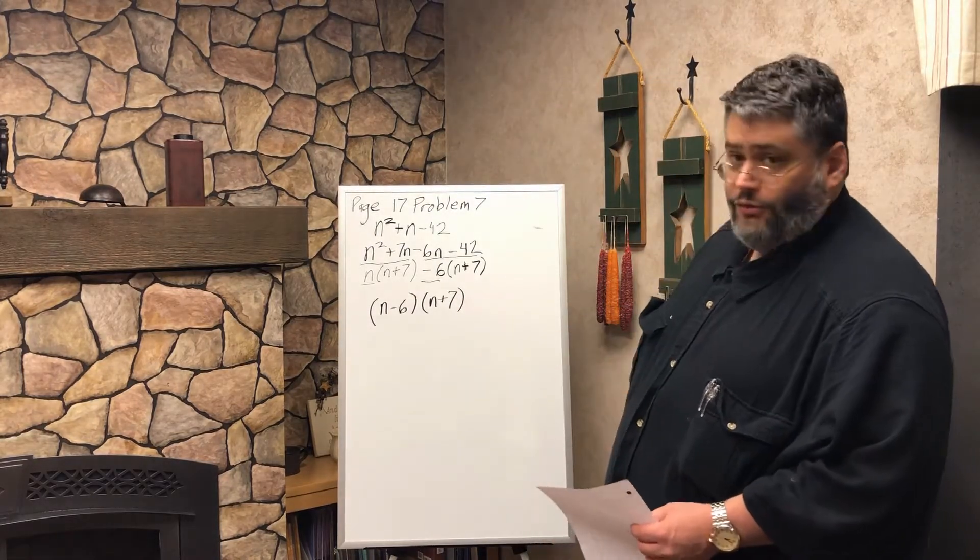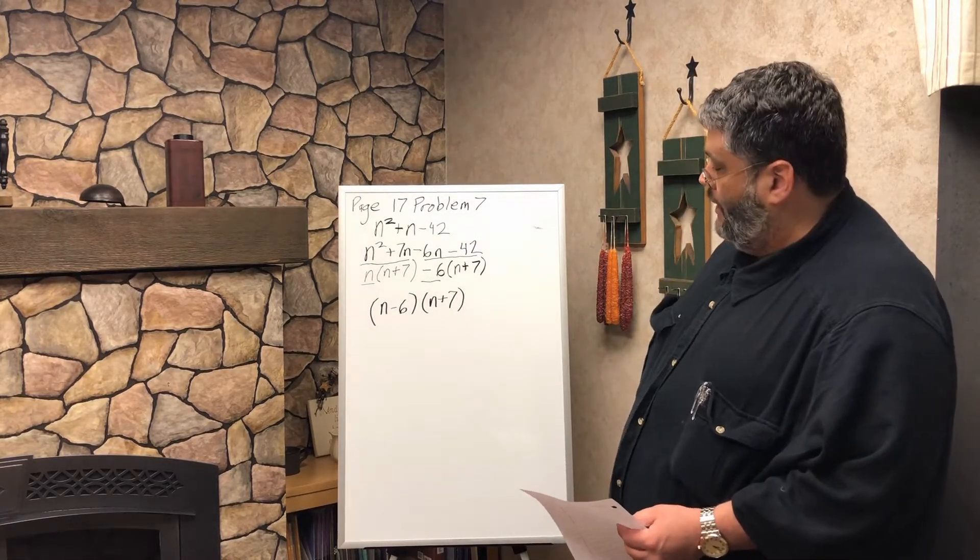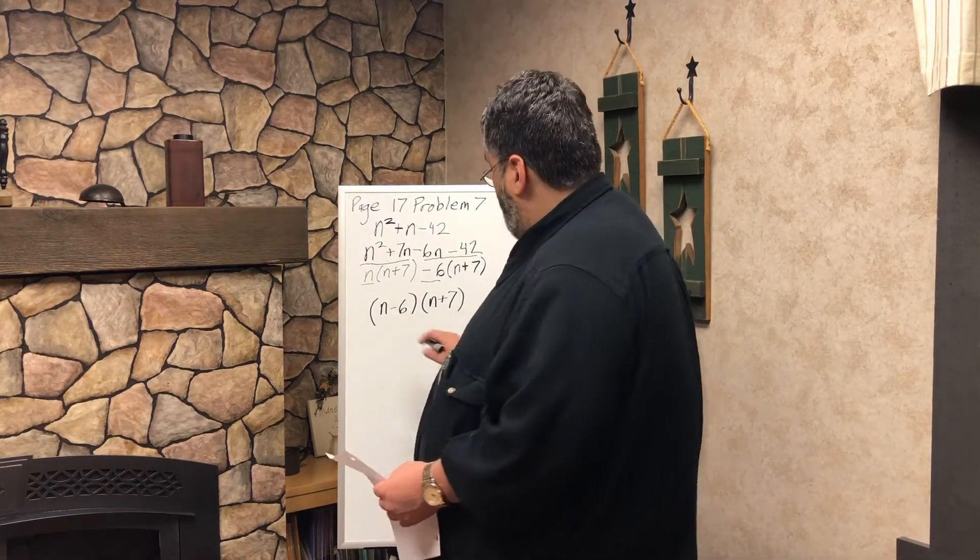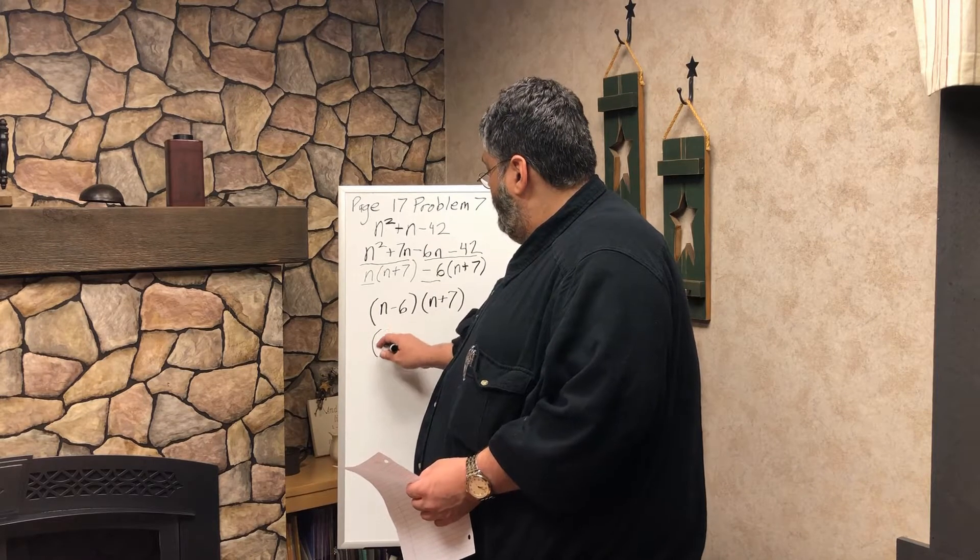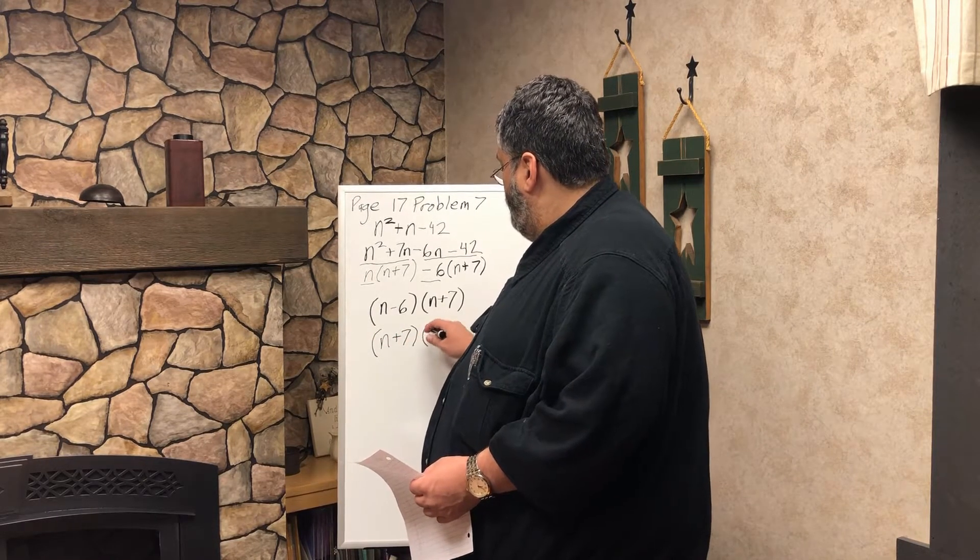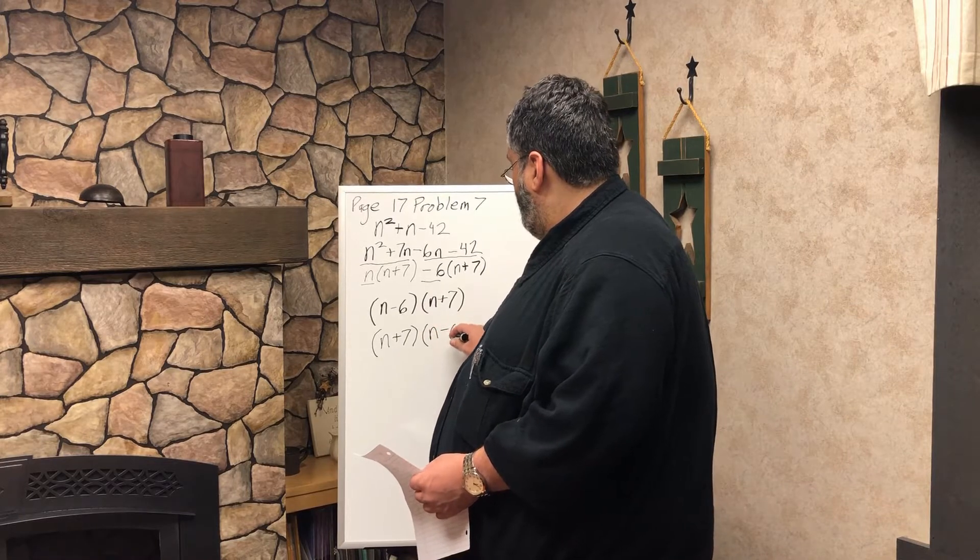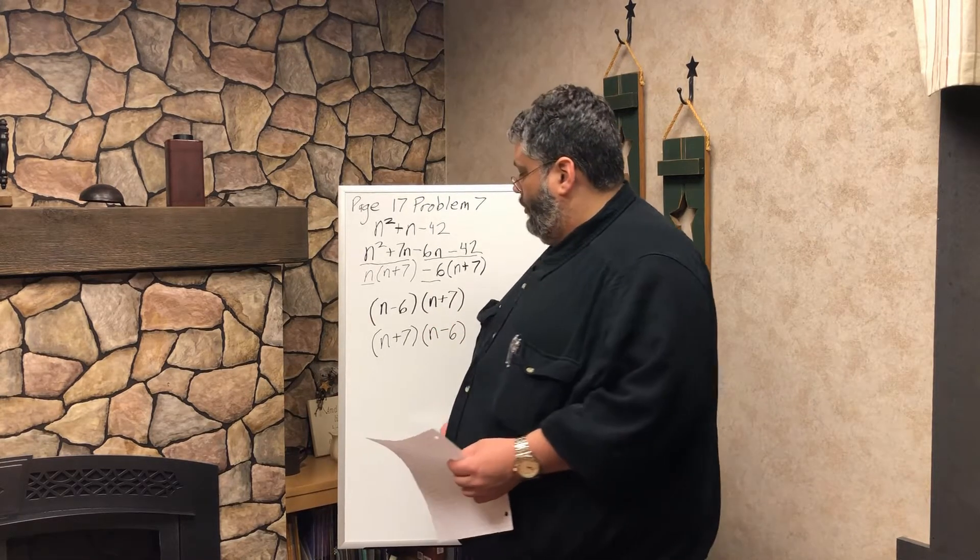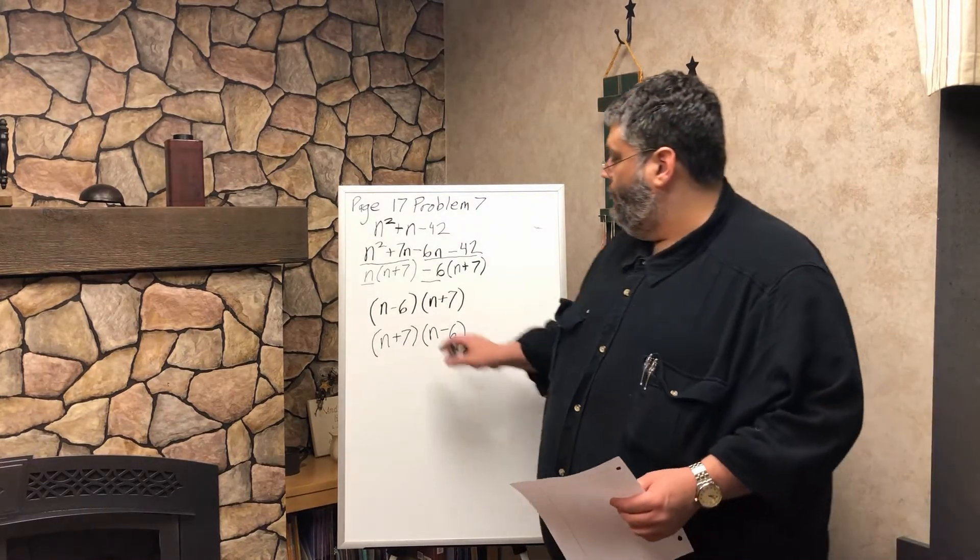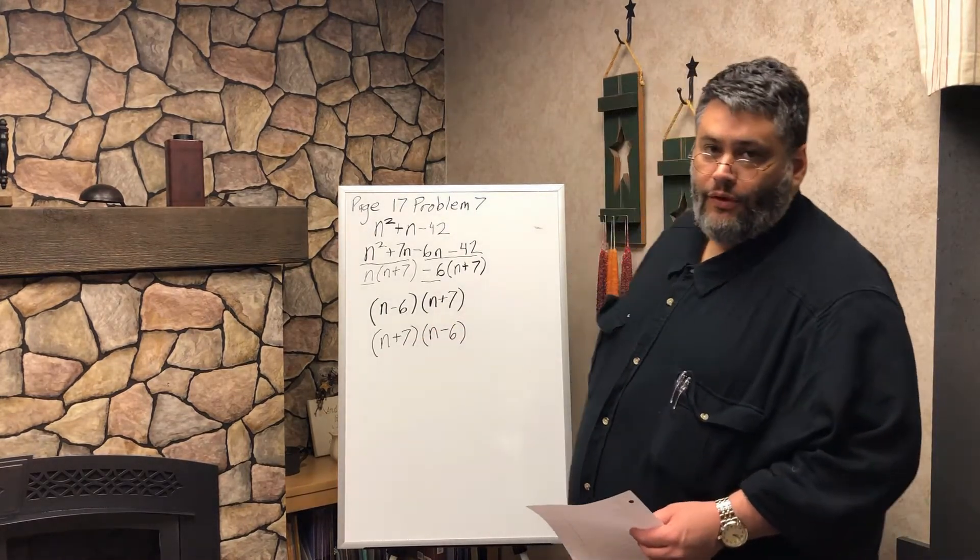So that what we have here is (n minus 6) times (n plus 7). And then this is the right answer. So actually I'm going to rewrite it. So it's (n plus 7) times (n minus 6).